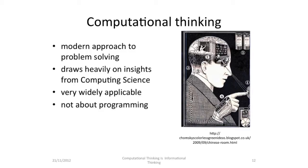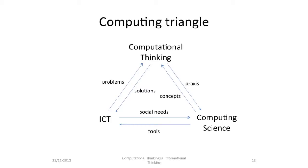Computational thinking is a very modern approach to problem solving. It certainly draws on insights from computing science and it's very widely applicable. The key aspect is that it's really not about programming, though programming is an end product of it. I think computational thinking is part of a triangle linking computing science and ICT. Computing science gives us concepts for computational thinking, and computational thinking gives us a practice for computing science. ICT gives us social needs into computing science, and computing science gives tools back to ICT. ICT then gives problems to computational thinking, and computational thinking gives us ways of finding solutions using the tools.